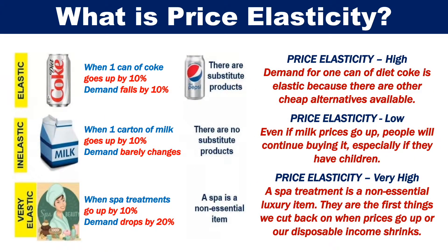Let's look at an example of where price elasticity is high. Demand for one can of Diet Coke is elastic because there are other cheap alternatives available, and substitute products such as Diet Pepsi. In this hypothetical example, when one can of Coke goes up by 10%, demand drops by 10%.